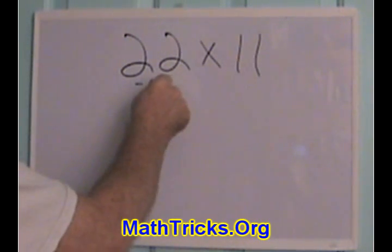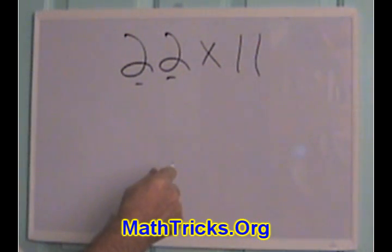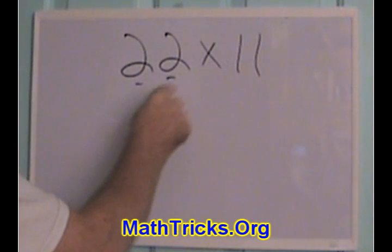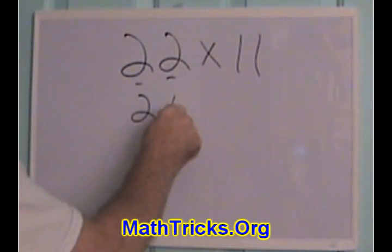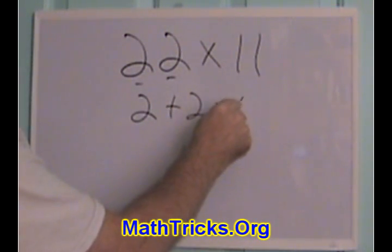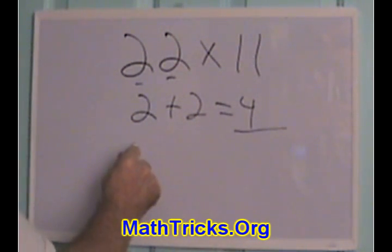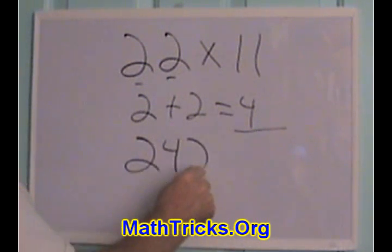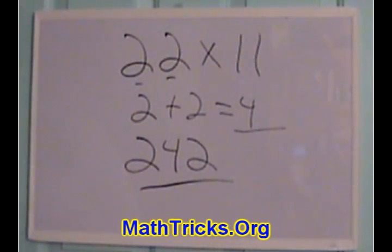Because you take, again, you take your two-digit number, you add the two digits, 2 plus 2 equals 4. You take your result and you insert it into the middle of your two-digit number. And there's your answer, 242.